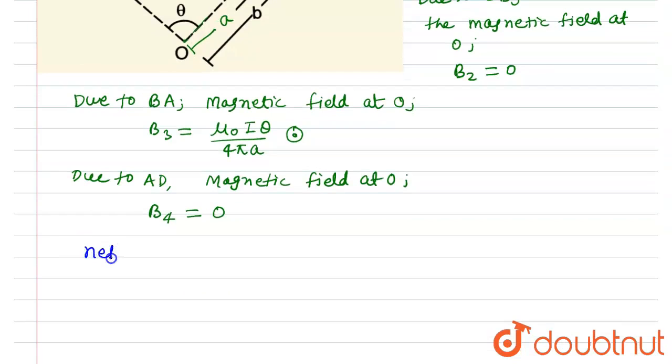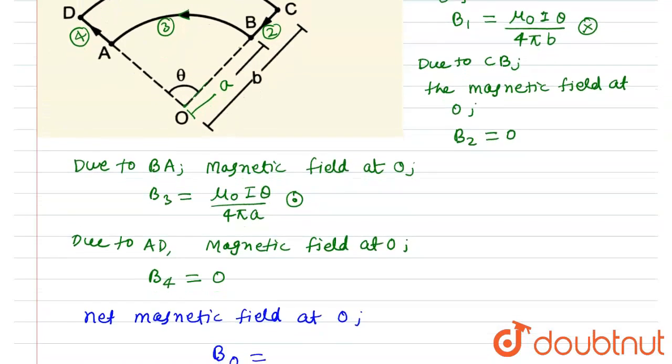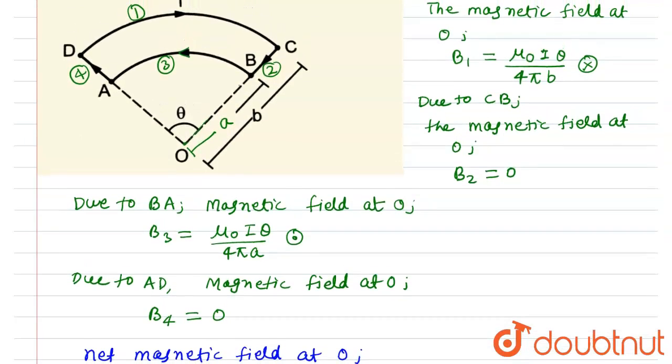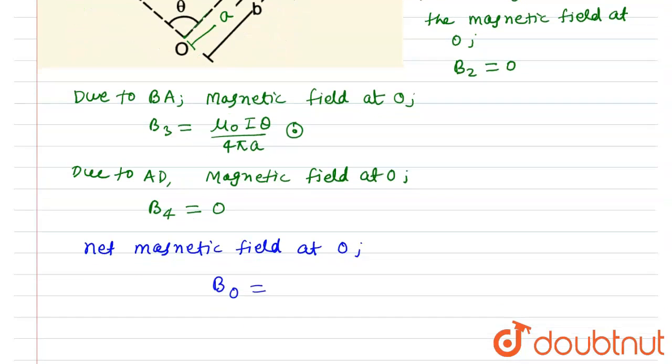Now, the net magnetic field at O due to all wires will be: since the direction of B₁ and B₃ is different and B₃ will be greater than B₁ because wire AB is nearer to point O compared to CD, this will be equals to μ₀Iθ/(4πa) minus μ₀Iθ/(4πb).